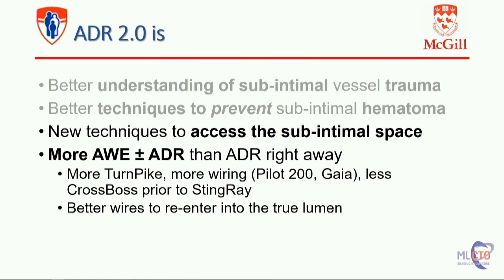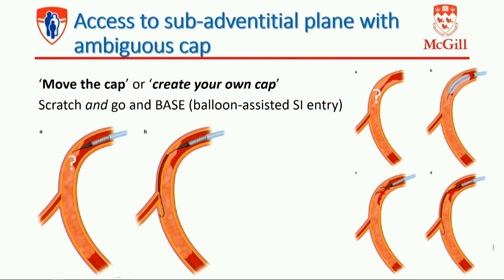We have new techniques now that we can take advantage of. First, we can access the subintimal space when you have an ambiguous cap. The 'move the cap' technique has made us more efficient to get access to the subintimal space when an ambiguous cap is present. With the scratch-and-go — basically puncturing the plaque, getting a microcatheter in, then getting a knuckle going — and BASE, which is Balloon-Assisted Subintimal Entry, where we create a dissection and get a wire and knuckle down.